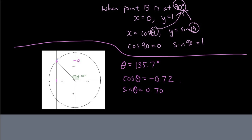So let's look at GeoGebra. Point B has an x-coordinate of negative 0.72 and a y-coordinate of 0.7. So the y-coordinate is 0.7 and the x-coordinate is negative 0.72 which is exactly the same as cosine theta and sine theta of 135.7.